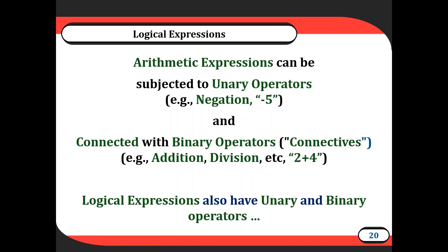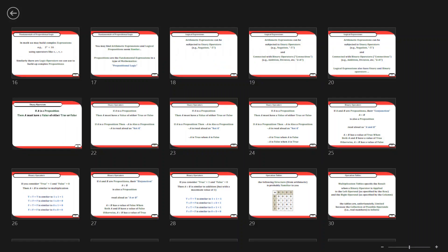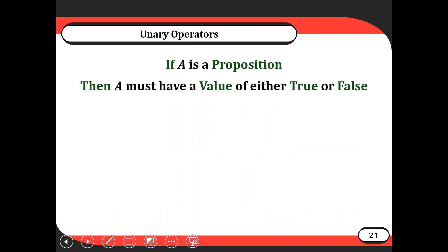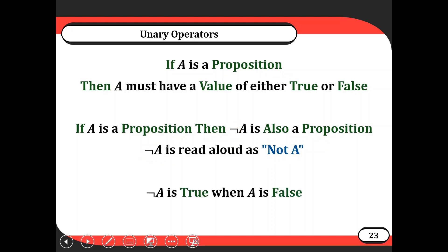Logical expressions also have unary and binary operators. If we have a proposition A, then A must have a value of either true or false. If A is a proposition, then we have what's called a logical NOT, or negation. It's a unary operator, and we read 'not A' aloud as 'not A.' Not A is true when A is false, and false when A is true — similar to a negation operator in math.